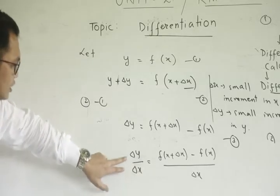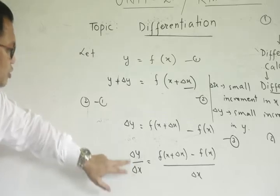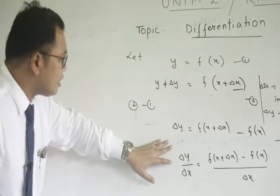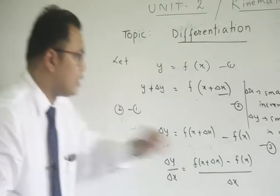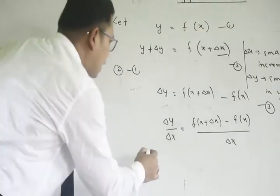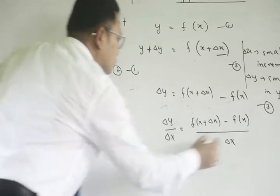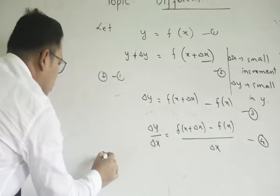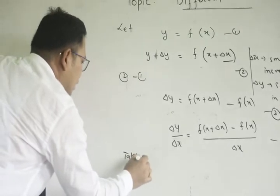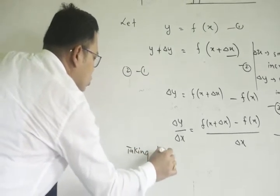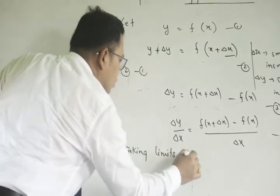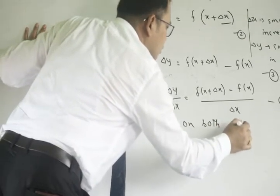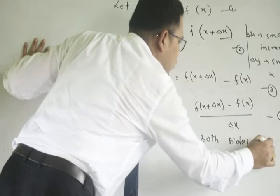Delta y and delta x — delta y is a small increment, delta x is a small increment. This is a ratio. Taking limits on both sides, taking limits on both sides of equation number 4.